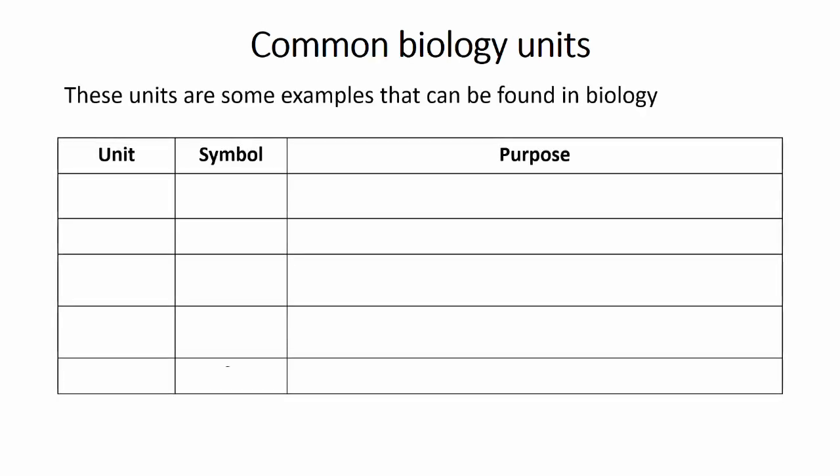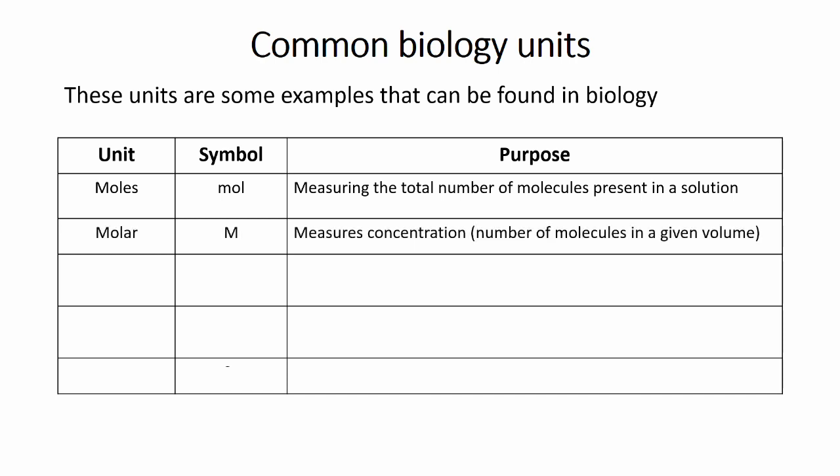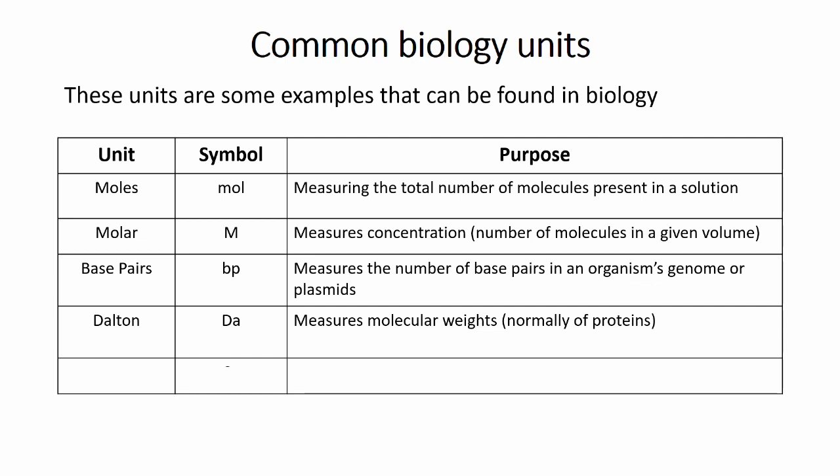Biology doesn't just use these units, and examples of more biologically significant units can include Moles, which measures the number of molecules of a particular molecule that is present, usually in a solution. Molar is used to measure concentrations of solutions, which is the number of molecules present in a given volume of solution. Base pairs is often used to measure the size of an organism's genetic material, and also the length of the genes. Daltons is often used to measure molecular weight of proteins, and Sieverts is an example of a standard unit for measuring ionising radiation.